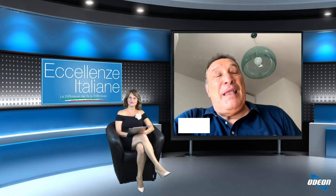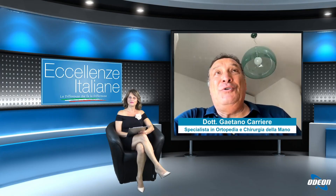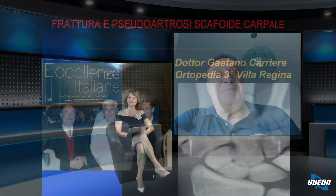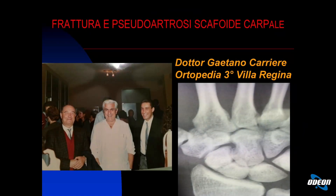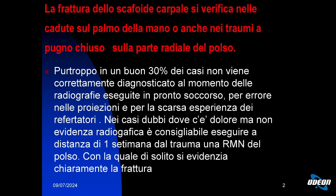Why are we talking about the carpal scaphoid? The carpal scaphoid is one of the small bones of the wrist that is not well known by many. It is located near the radius and can be identified by the small black line inside it on imaging. It is a bone that fractures frequently when falling, especially from motorcycles or bicycles, when the wrist is extended and the palm hits the ground. The importance of this bone will become clear when we see the consequences of untreated fractures.